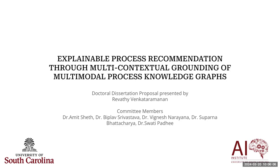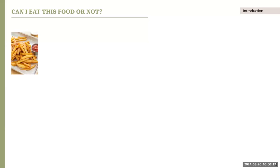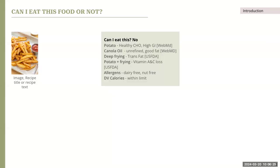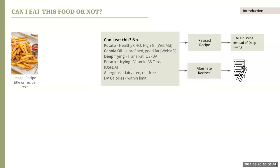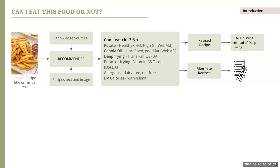Moving on to the presentation, I'm here to defend my proposal titled 'Explainable Process Recommendation through Multicontextual Grounding of Multimodal Process Knowledge Graphs.' Starting with a motivating use case: a user with diabetes would like to know whether they can have a particular food item or not. It would be helpful if the question is answered along with detailed analysis of ingredients, cooking actions, and other elements present in the food item. So given a particular food item is not suitable, it would also be helpful if the recipe is revised and alternative suggestions are provided, or a whole set of alternative recipes that most closely resembles the input recipe. In order for a recommender to do so, it needs to have access to the recipes, recipe text and images, and also knowledge sources about the ingredients and cooking actions present in them.